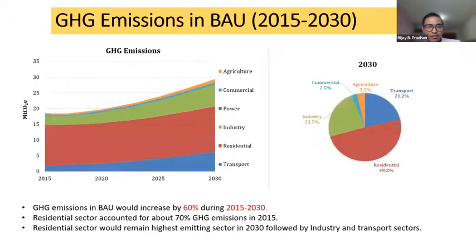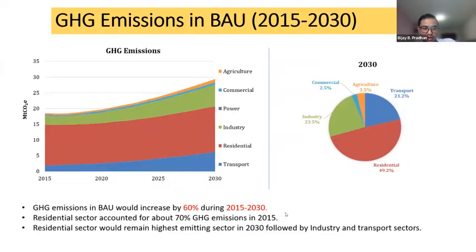The graph here shows GHG emissions in BAU. The GHG emissions in BAU would increase by 60% during 2015 to 2030. The residential sector would account for the highest emissions throughout the period - it accounted for about 70% of GHG emissions in 2015, and in 2030 it would still have almost half of the emissions. The industry and transport sectors are the second and third largest emitters.